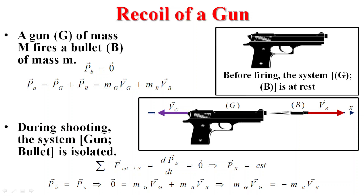Our system is gun-bullet. Before firing the bullet, P before equals zero. After firing, P after is equal to the linear momentum of the gun plus the linear momentum of the bullet. The linear momentum of the gun is M_gun times V_gun, and the linear momentum of the bullet is M_bullet times V_bullet.